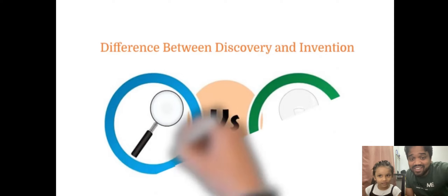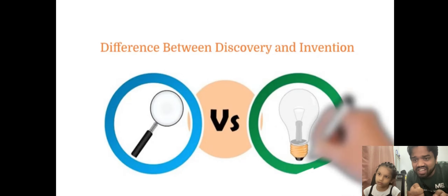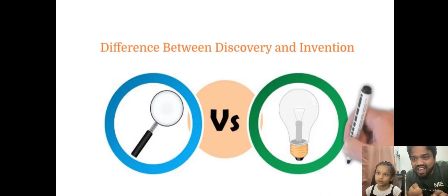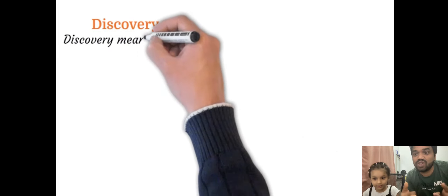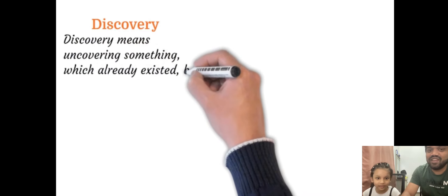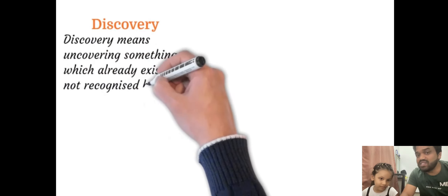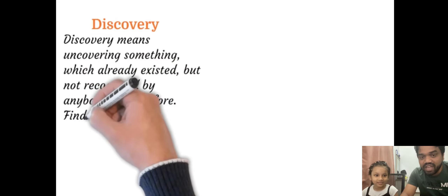You can see here two icons. Discovery means something which is already existing, and on the right side there is a bulb — that is something already invented. Now, what is the definition of discovery? First, we will learn what is discovery.